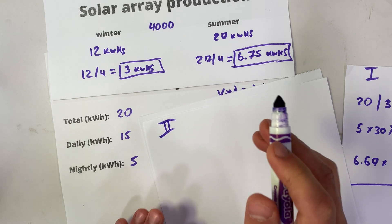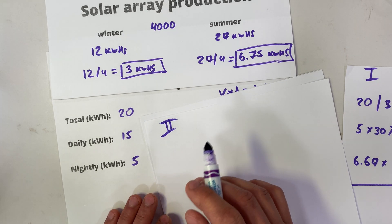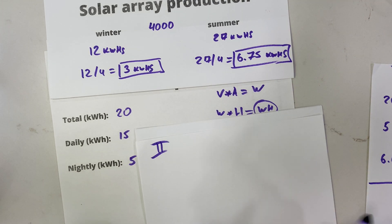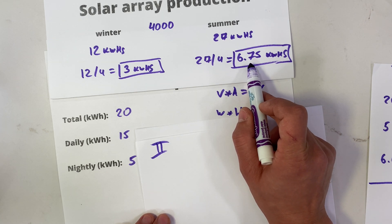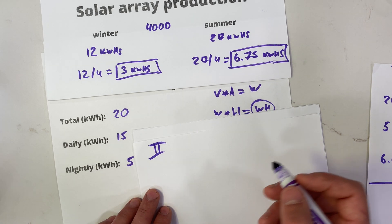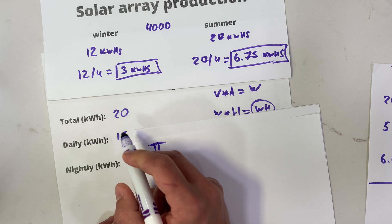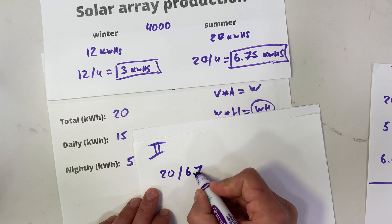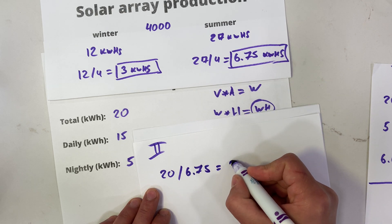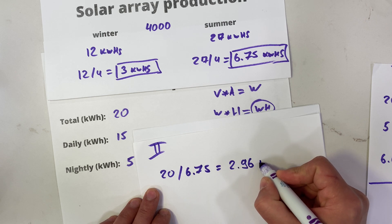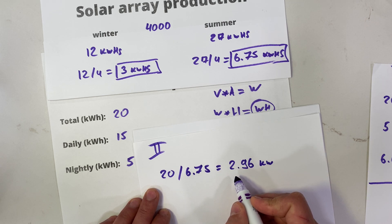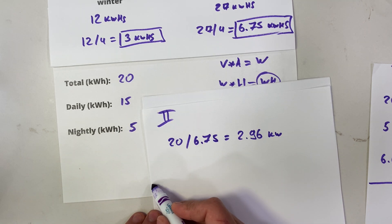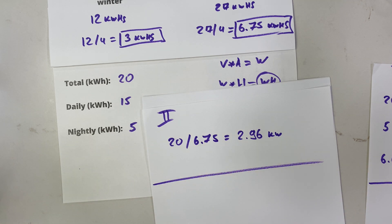Example two: you have grid power available as backup, so you don't need to cover all your needs with solar. In this case we use the summer coefficient of 6.75. Take our consumption of 20 kilowatt hours per day divided by 6.75 and we get 2.96 kilowatts — that's our solar array size. Battery size stays the same at 6.5 kilowatt hours, since nightly usage is unchanged.